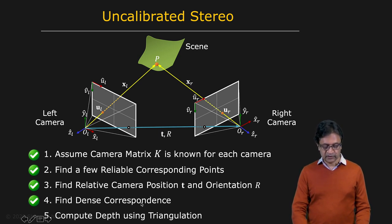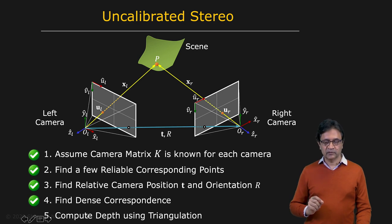We have found dense correspondence. And now what we need to do is to find these corresponding pairs, use them to triangulate and compute the depths of the coordinates, three-dimensional coordinates of points in the scene.